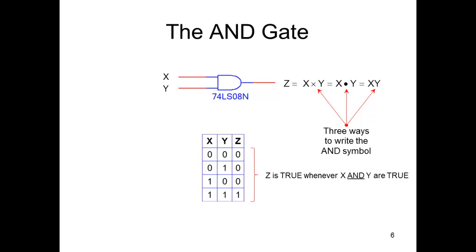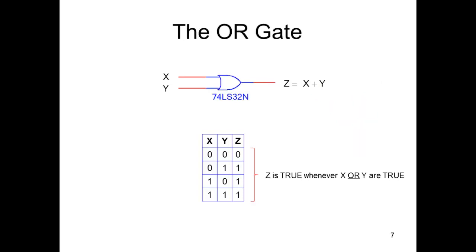The OR gate we write with a plus and we say X or Y. It comes on whenever either one of them comes on.